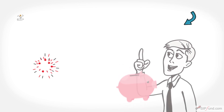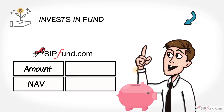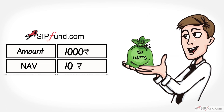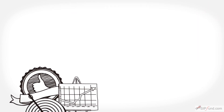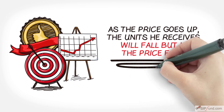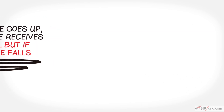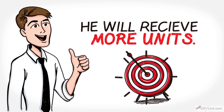Assume Rahul invests in a fund at a price of rupees 10. If he invests rupees 1,000, he gets 100 units. As the price goes up, the units he receives will fall, but if the price falls, he will get more units.